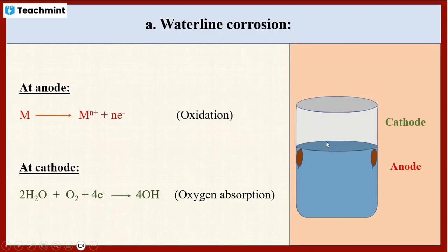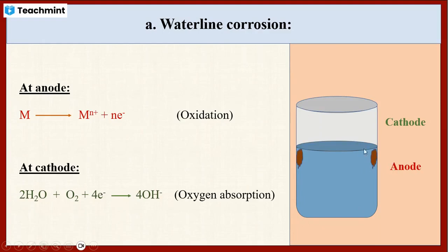In waterline corrosion, corrosion takes place just below the waterline because the oxygen concentration there is very low. Above the waterline, the oxygen concentration is very high. So the upper portion acts as the cathode and the lower portion acts as the anode, and corrosion takes place in the anodic region, not at the cathodic region.